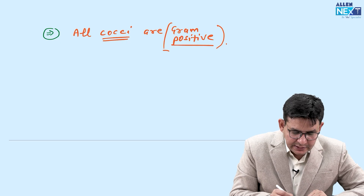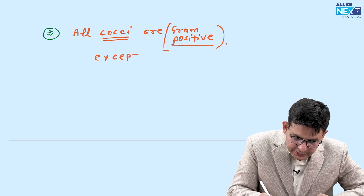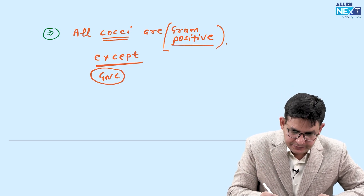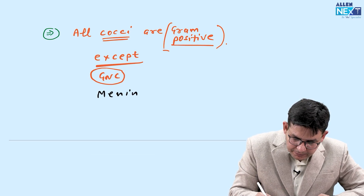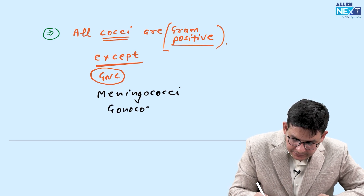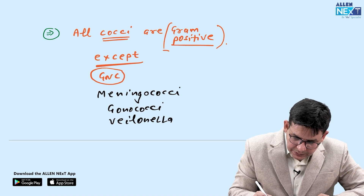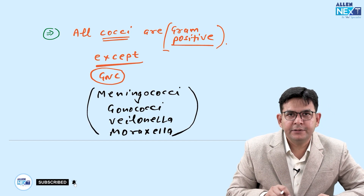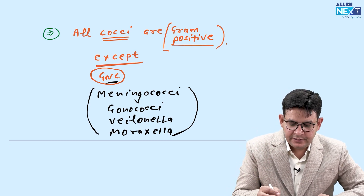Remember in this sense: all cocci are gram-positive, except the four which are gram-negative cocci. The names of those four are: one is Meningococci, one is Gonococci, one is Veillonella (which is less known), and one is Moraxella.